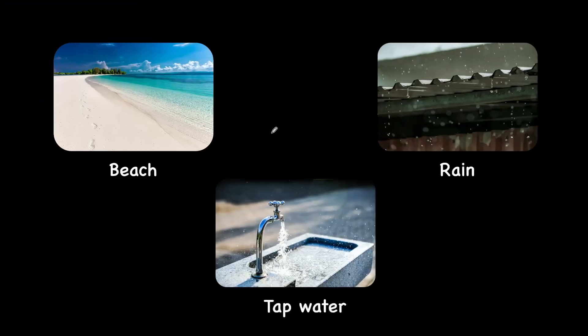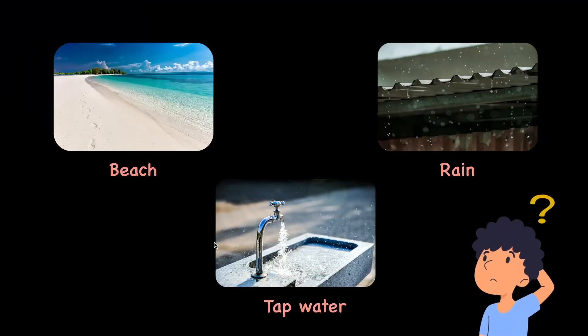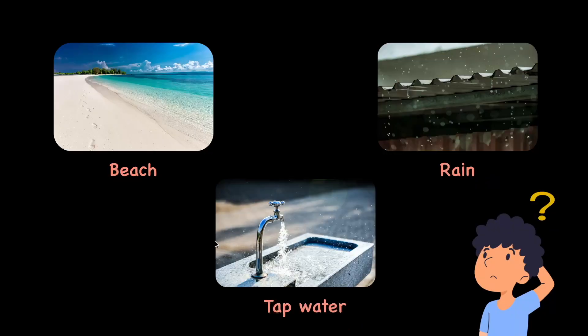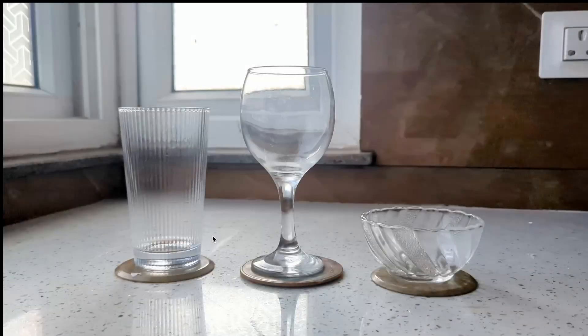We see it at the beach, when it rains, and even in our taps. But have you noticed how water is everywhere around you, but yet it sometimes looks different? To understand this, let's do a very simple experiment.